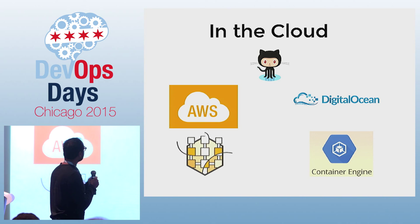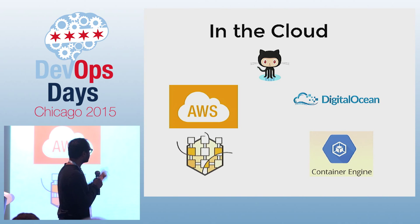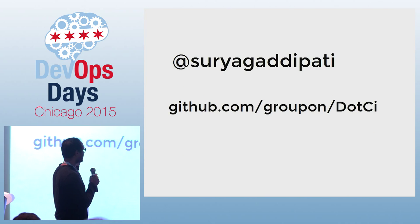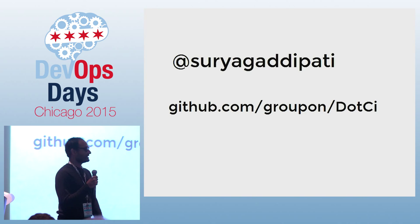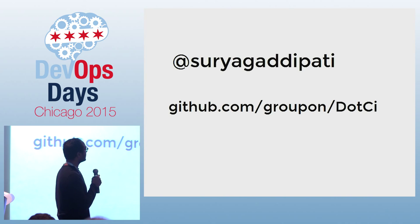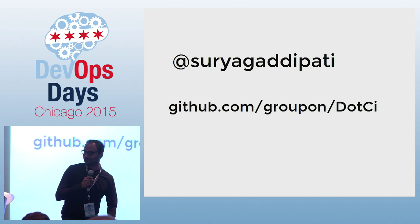We can do even better by moving all this stuff up to the cloud. GitHub is cloud hosting for source code. You can host your Jenkins master in AWS or DigitalOcean, or any of those. Google and Amazon also have their own container services. I know I fit a lot of stuff into my five-minute talk, but you can hit me up on Twitter. That's the URL for the .CI repo. Thank you.